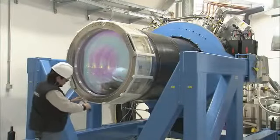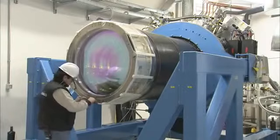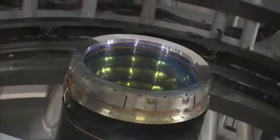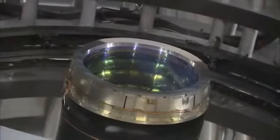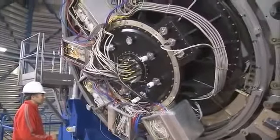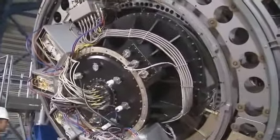At the heart of VISTA is a three-ton camera containing 16 special detectors sensitive to infrared light with a combined total of 67 megapixels. This huge instrument provides the widest sky coverage of any astronomical near-infrared camera.